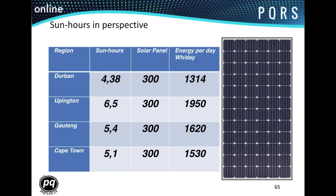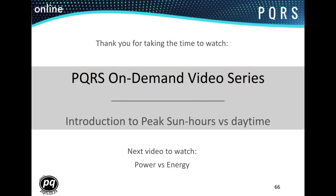This slide shows us the average energy generation potential of a 300W panel in different regions, based on the principle that different areas have different levels of irradiation. Thank you for joining us in this video. In the next video we will take a look at the difference between power and energy, how to differentiate between them, and where those calculations and values can be applied in a solar PV system.